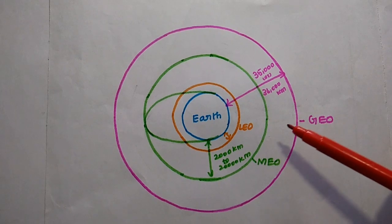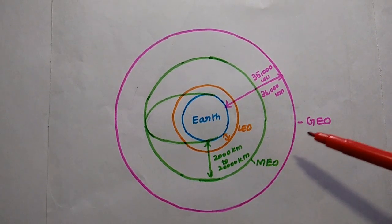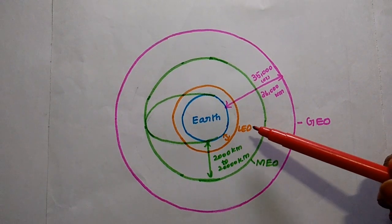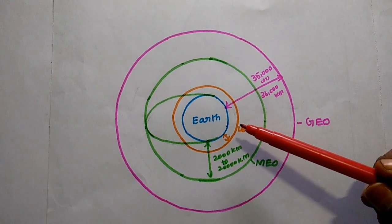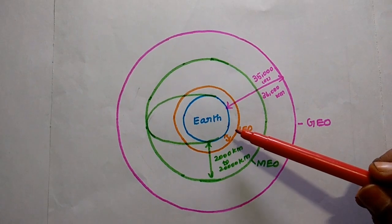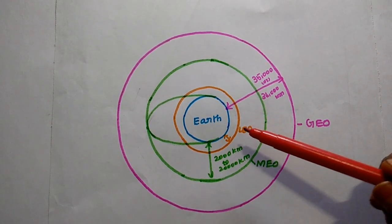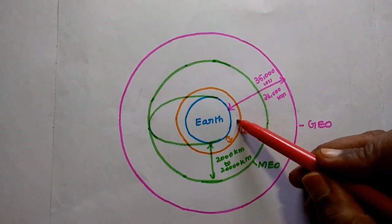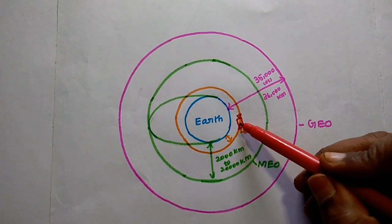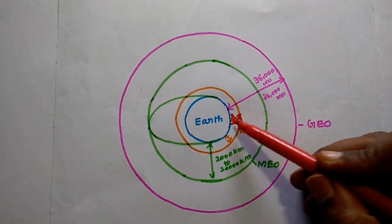This is the pictorial representation of low earth orbit, medium earth orbit, and geostationary earth orbit. Low earth orbit, that is LEO, is very close to earth's surface at 200 km to 2000 km. Here we can see the coverage area — if satellites are in LEO, they can cover only a smaller area of the earth.